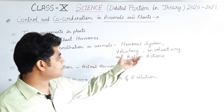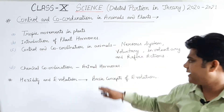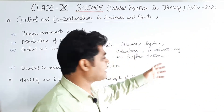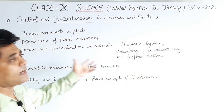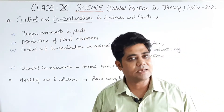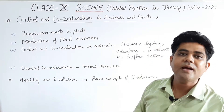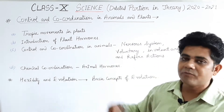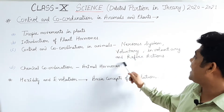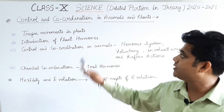In Control and Coordination in Animals, the deleted parts are: the nervous system, voluntary and involuntary responses, and reflex actions — these are removed from this chapter. Chemical coordination, meaning animal hormones, is also not to be studied. The endocrine glands section is also removed. So a major portion of Control and Coordination has been deleted.